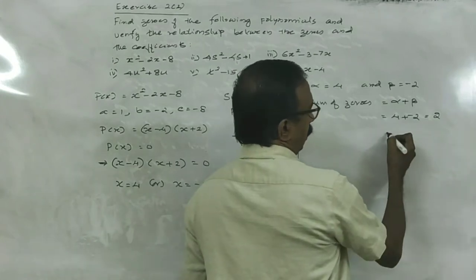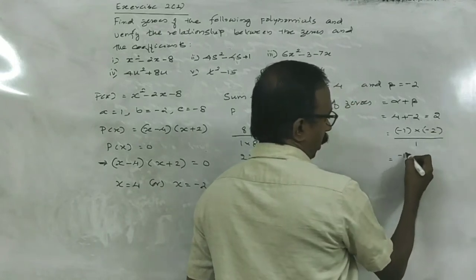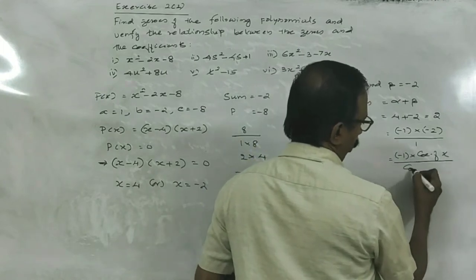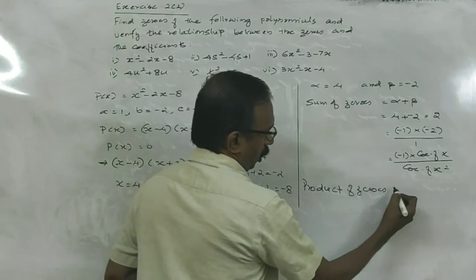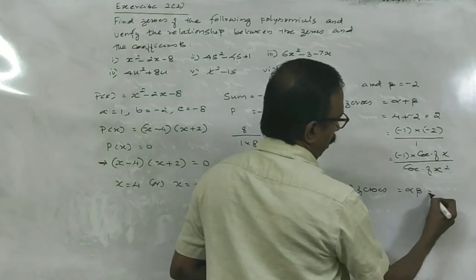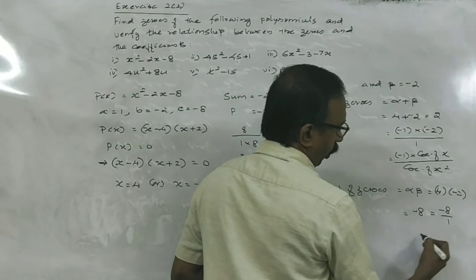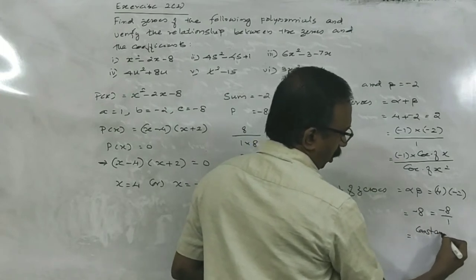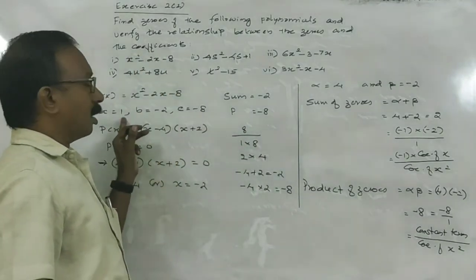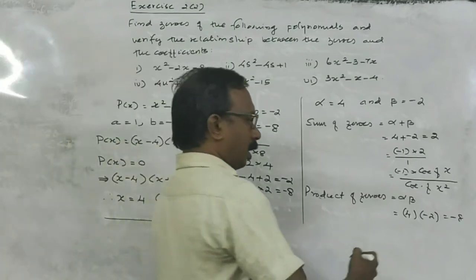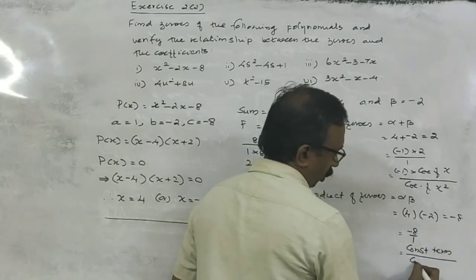Here, you can recognize minus 1 into minus 2 divided by 1 — that is minus 1 into coefficient of x divided by coefficient of x squared, isn't it? Now, product of zeros: alpha beta is equal to 4 into minus 2, that is minus 8. And minus 8 is minus 8 divided by 1, that is minus 8 is the constant term divided by coefficient of x squared.